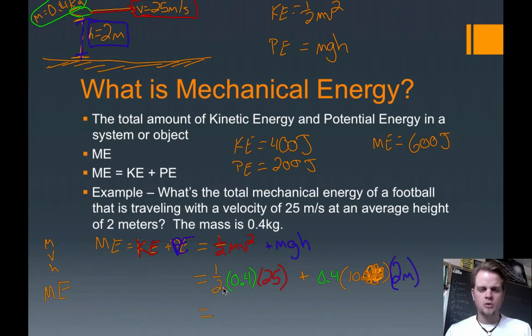So let's see. One half of 0.4 is 0.2. And that times 25 is, let me punch it in on my calculator, 25 times 0.2 equals 5. So we know that the football has 5 joules of kinetic energy. The moving energy is 5 joules. Plus we add this stuff here. So what is 0.4 times 10? That's 4. You just move the decimal over one. So we know that that's 4. What's 4 times 2? That's 8.